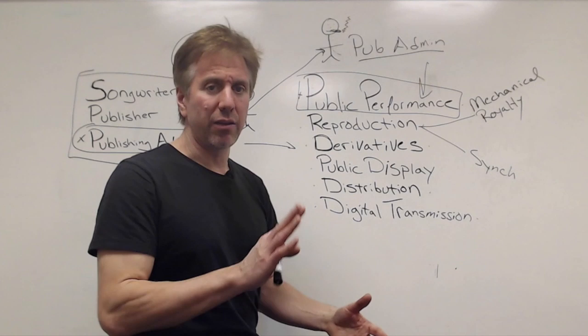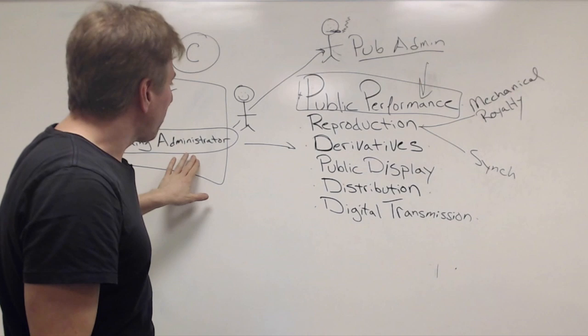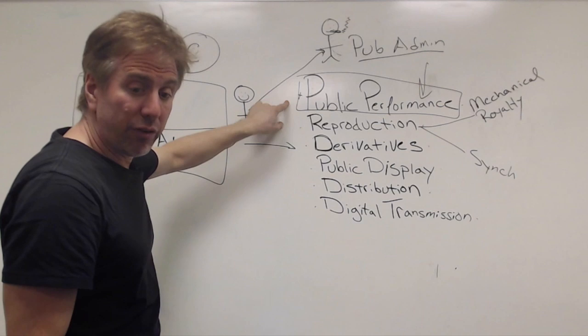So those are the six slices of copyright. The publishing administrator deals with licensing and collecting them. In many cases, it will outsource public performance. My company Audium is an outsourced solution for these primarily.